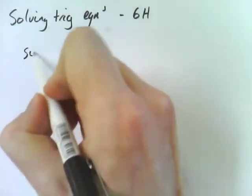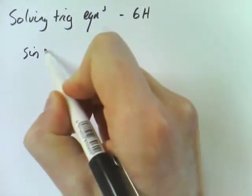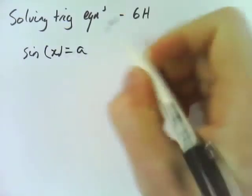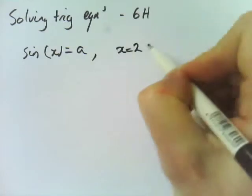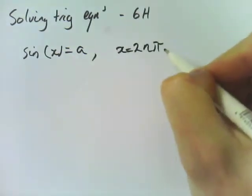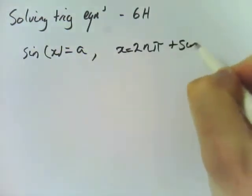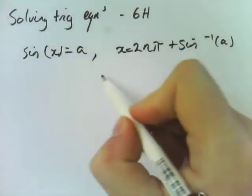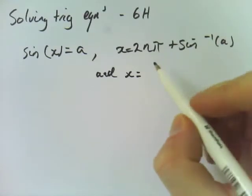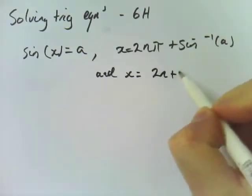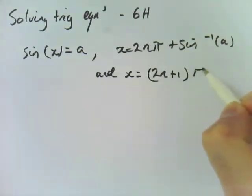I'm just going to write these down. These are in your book. If sine of x equals a, then x is 2n pi plus sine to the minus 1 of a, and x is also equal to 2n plus 1 pi minus sine to the minus 1 of a.